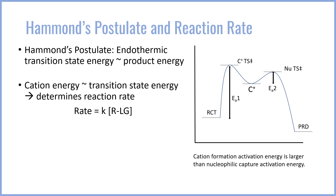You might be wondering: there is an activation energy for the second step for the nucleophilic capture — and you would be correct. However, the carbocation formation energy, EA1, is much, much larger than the activation barrier for nucleophilic capture. This is because the cation is such a reactive intermediate that the reaction tends to just go once the cation has formed. So it's actually that first step that is the rate determining step in this two-step mechanism — cation formation is rate determining.